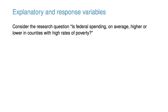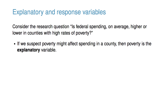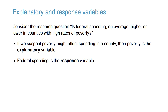Consider the research question: is federal spending, on average, higher or lower in counties with high rates of poverty? If we suspect poverty might affect spending in a county, then poverty is an explanatory variable, and federal spending is a response variable. Furthermore, if there are many variables, it may be possible to consider a number of them as explanatory variables. Labeling variables as explanatory and response does not guarantee the relationship between the two is actually causal, and we should always remember that association does not imply causation.